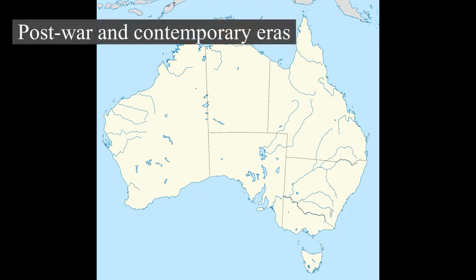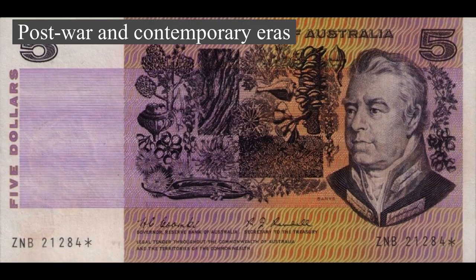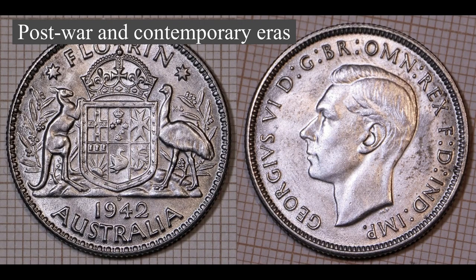In the decades following World War II, Australia enjoyed significant increases in living standards, leisure time, and suburban development. Using the slogan 'populate or perish,' the nation encouraged a large wave of immigration from across Europe, with such immigrants referred to as New Australians. A member of the Western Bloc during the Cold War, Australia participated in the Korean War and the Malayan Emergency during the 1950s and the Vietnam War from 1962 to 1972. During this time, tensions over communist influence in society led to unsuccessful attempts by the Menzies government to ban the Communist Party of Australia and a bitter splitting of the Labour Party in 1955.